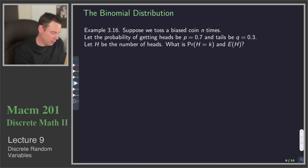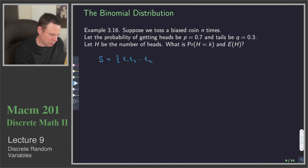So we'll start with our sample space. Our sample space is going to be: toss one, toss two, all the way up to toss n. We just record head or tails, where each of these tosses is a head or a tails.